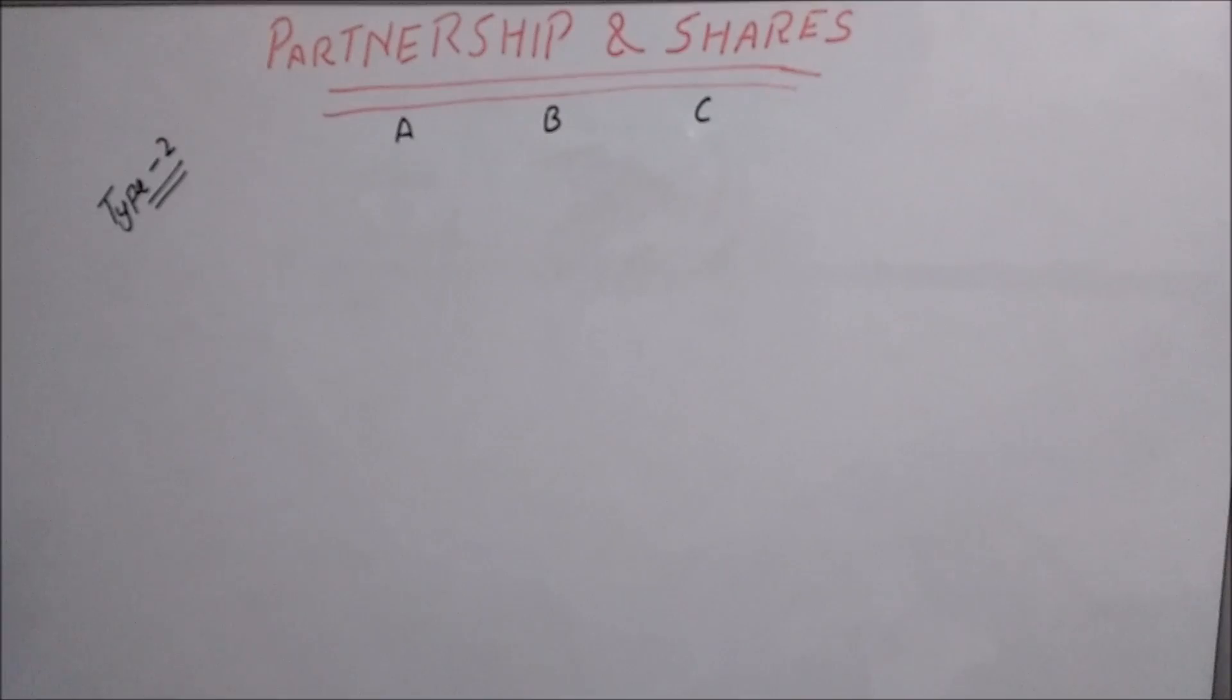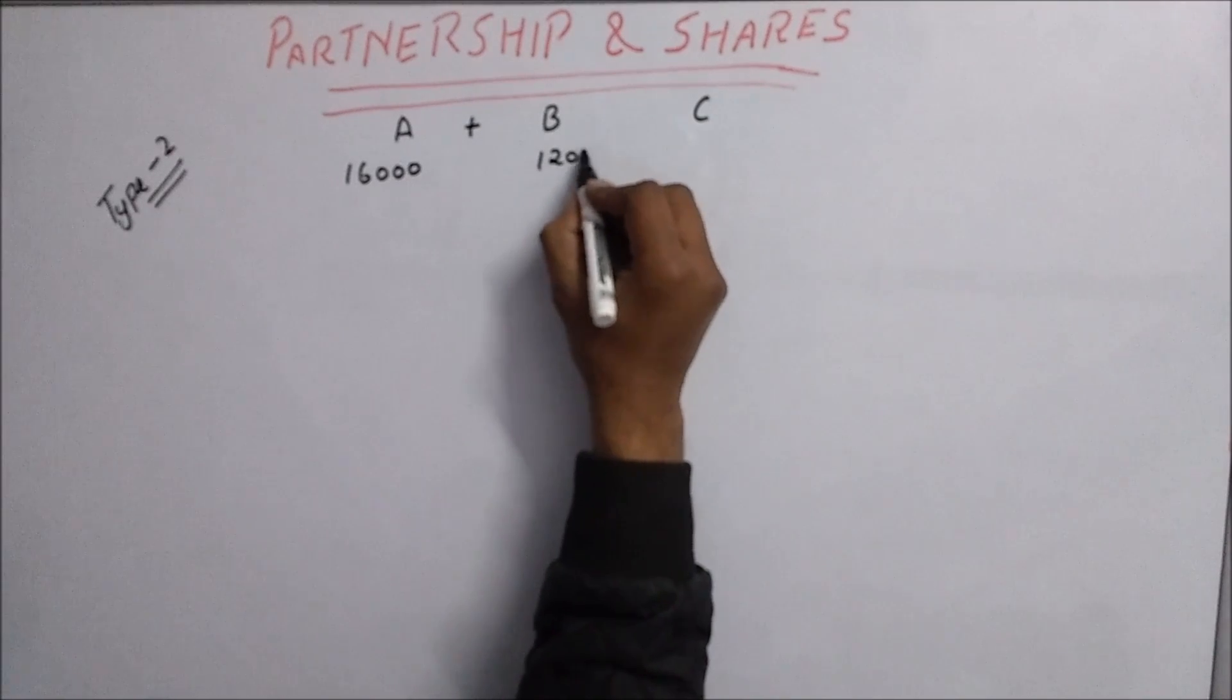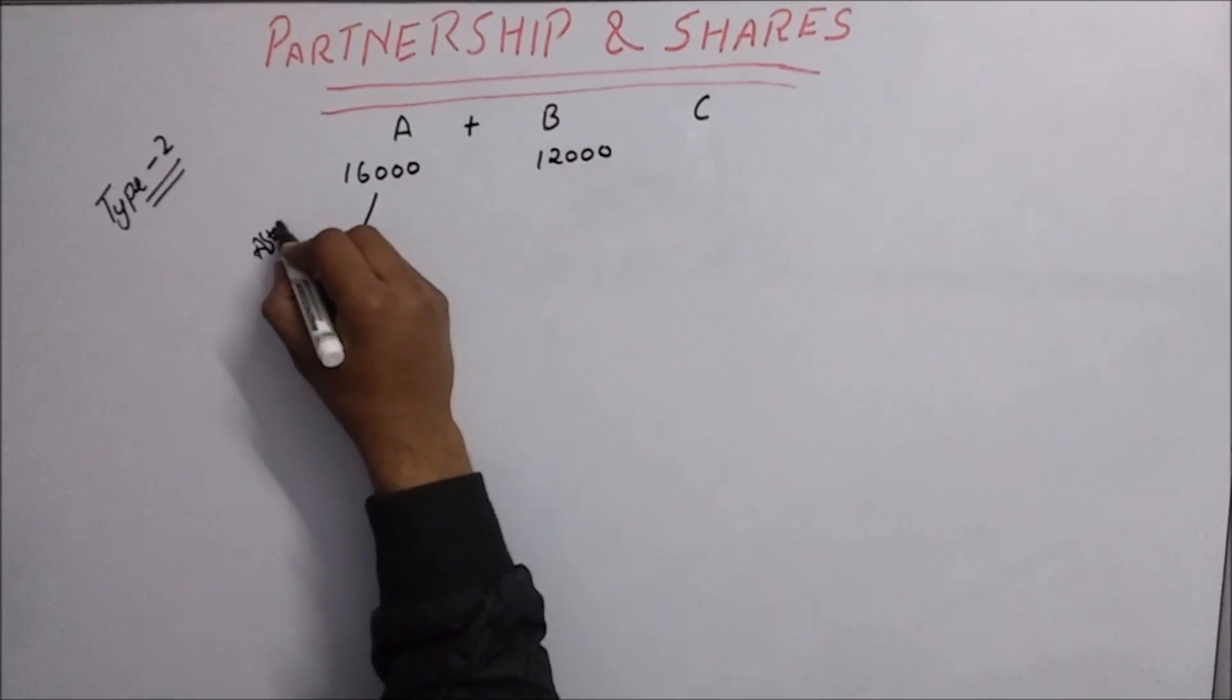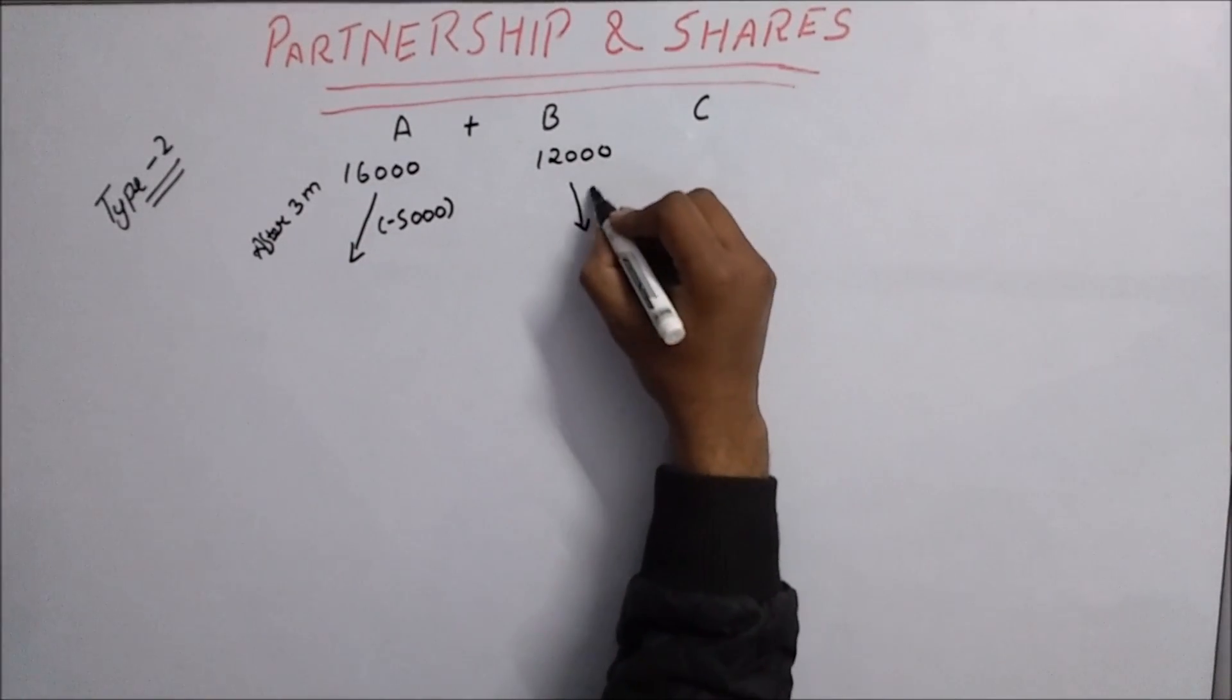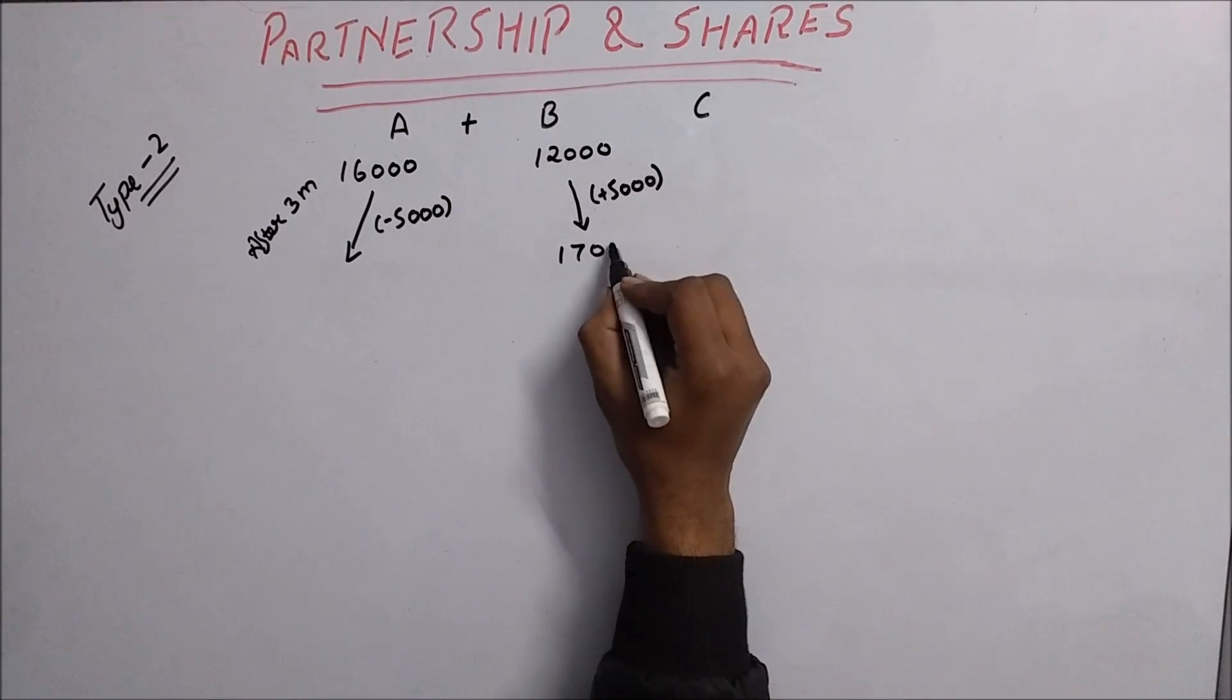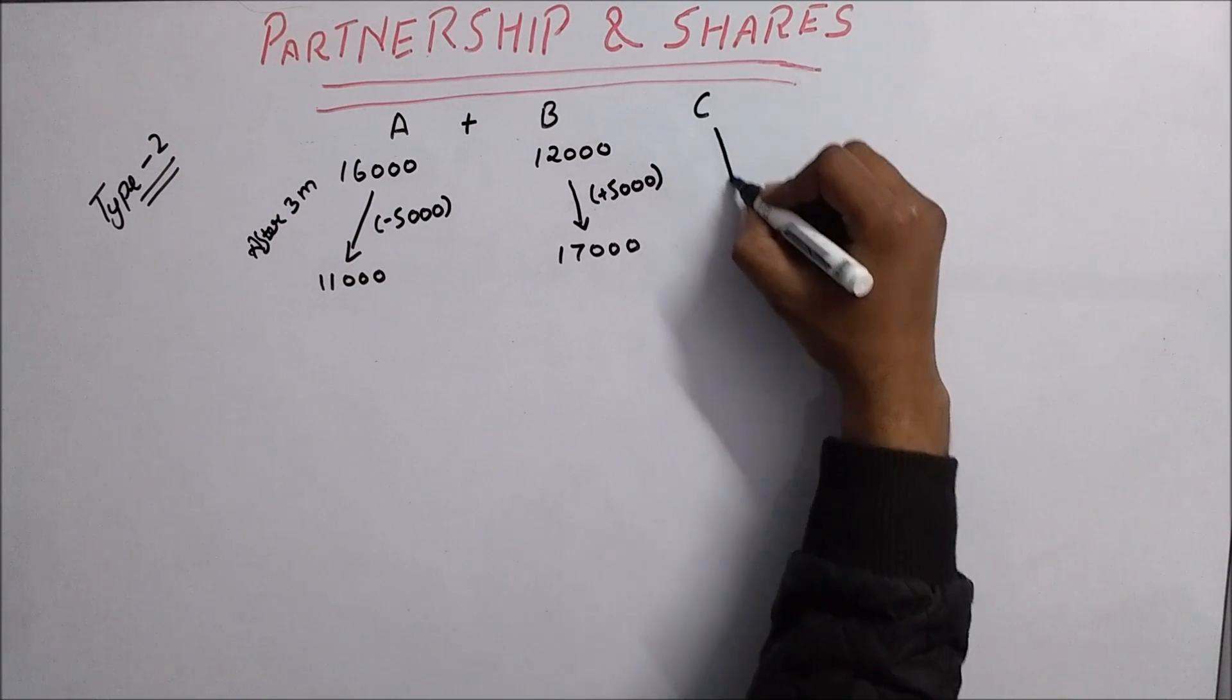Now Type 2 question: A and B started a business with capital of 16,000 and 12,000. After three months, A withdrew 5,000 and B invested 5,000 more, so A has 11,000 and B has 17,000.